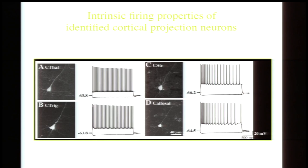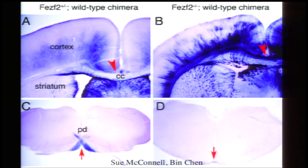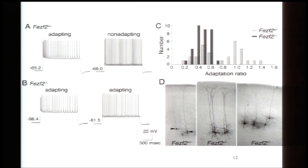This thick-tufted subtype of layer 5 pyramidal neurons, defined by the morphology of their dendrites, has a characteristic non-adapting firing pattern. The other major subtype has an adapting firing pattern with a thinner apical dendrite. Work from several laboratories identified specific transcription factors critical to the development of these thick-tufted neurons. Our contribution was showing that when animals lack the transcription factor FezF2, they adopt not only the morphological features of the other subtype but also the electrophysiological features — they no longer exhibit the non-adapting phenotype.